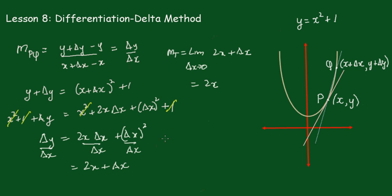Remember before we said f'(x) would equal this. The notation used here is that we change Δy/Δx to dy/dx, so dy/dx = 2x. That is the gradient of the tangent — that's what dy/dx means — and we'll be using this notation later on.